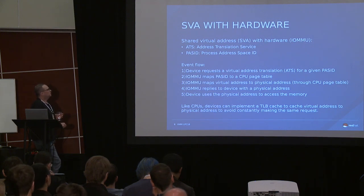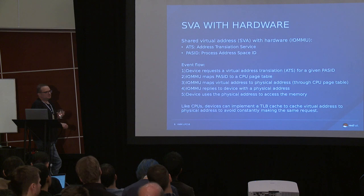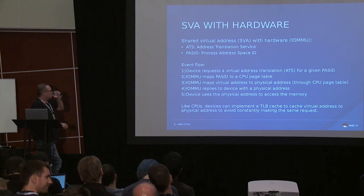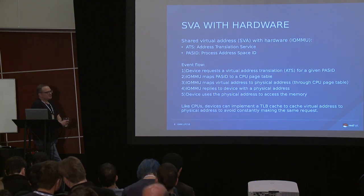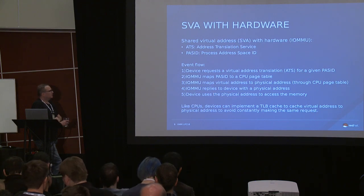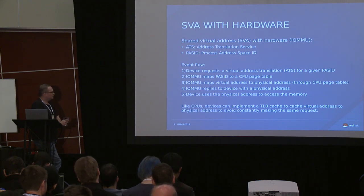SVA with hardware uses IOMMU with two things: the Address Translation Service (ATS) and the Process Address Space ID (PASID). The event flow is: the device requests a virtual address translation via ATS against a given PASID. The IOMMU maps the PASID to a given CPU page table, then walks down that CPU page table to look up the physical address for the virtual address — exactly as the CPU does when walking its own page table.